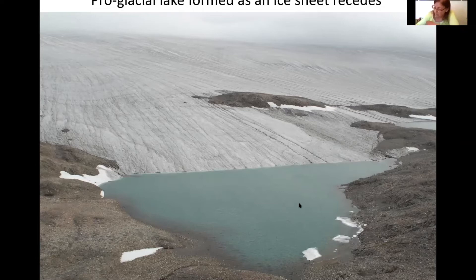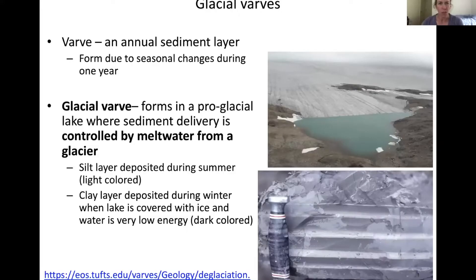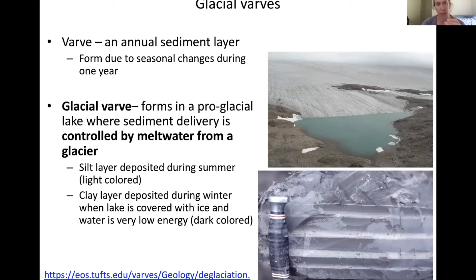I'm going to take a deep dive into these sediments — they're my favorite thing in the whole world. The sediments that accumulate on a lake bed in this kind of proglacial lake environment are called varves. This is what underlies Hanover and all of those plains around this area. The definition of a varve is an annual sediment layer — a sediment layer that we know as geologists represents one year of time. A glacial varve forms in a proglacial lake, and the sediment delivered to that varve is controlled by meltwater from the ice sheet.